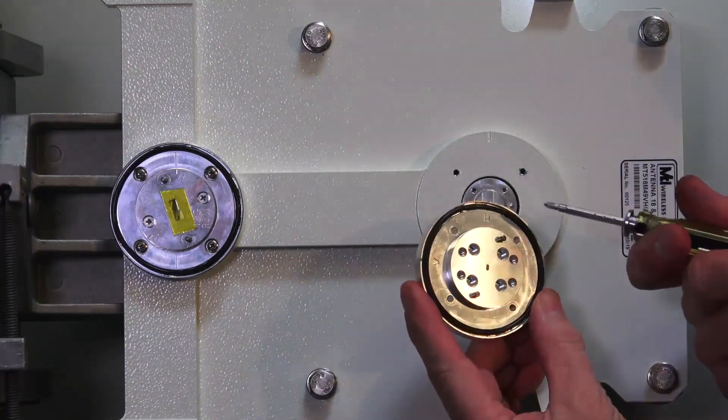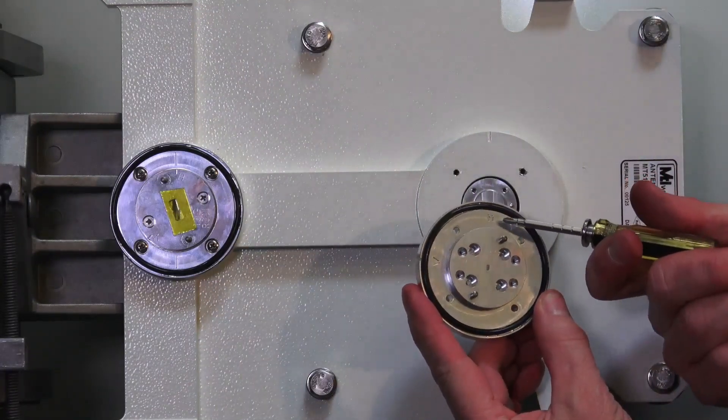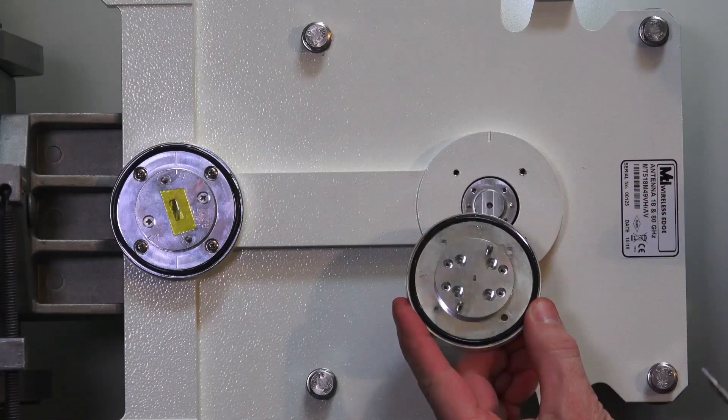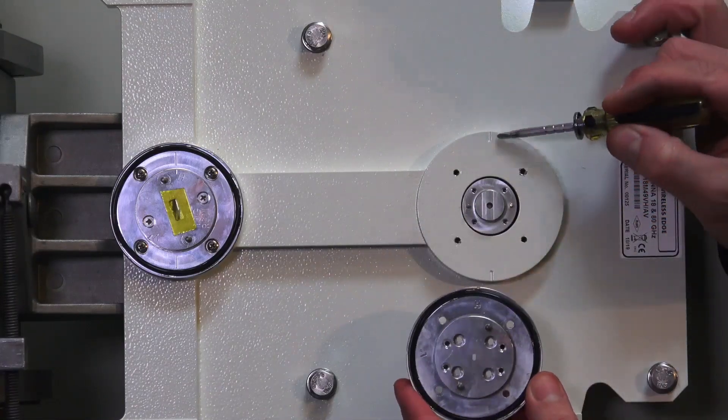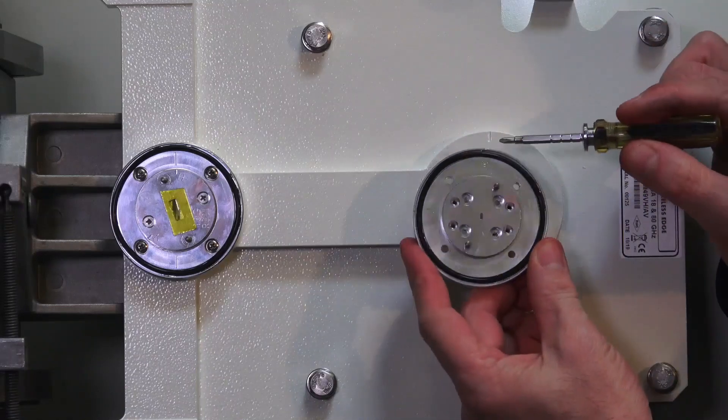Now, if we look closely, stamped onto this is our horizontal and vertical indicators. There's also a line stamped into the antenna, and we need to match these up.